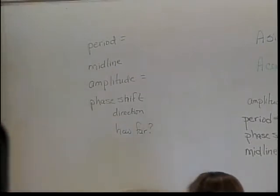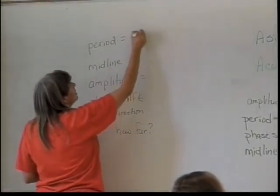Well, pick any two spots that you can clearly distinguish and count how many lines there are between them. So, in this case, for instance, up here, here's a high point. It's back up to a high point. So, I can count. There's 1, 2, 3, 4, 5, 6, 7, 8, 9, 10. So, the period is 10.